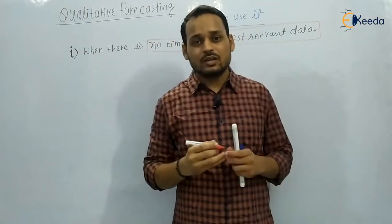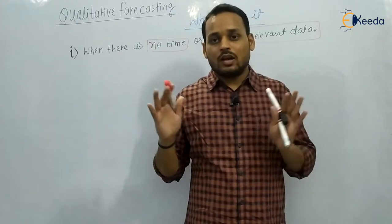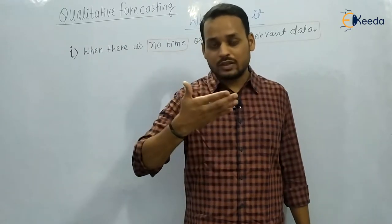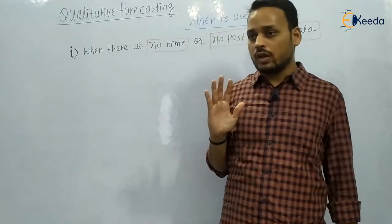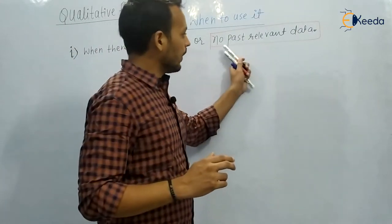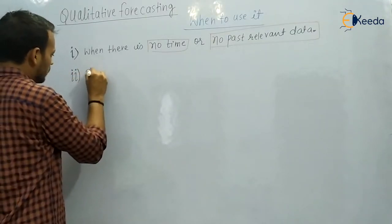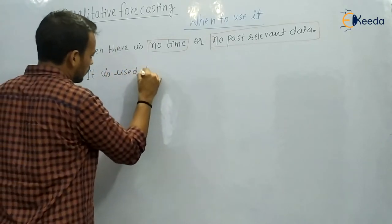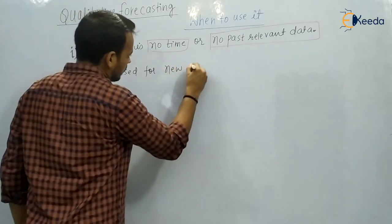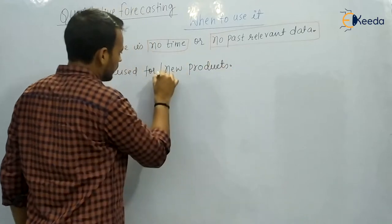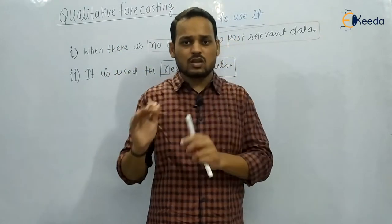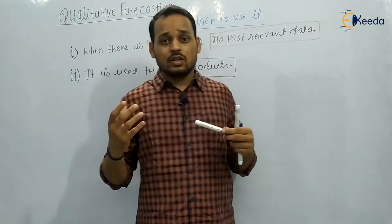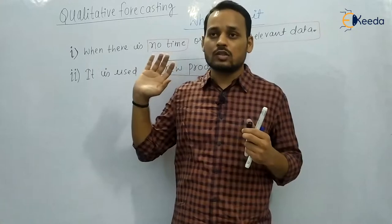Whenever we are in a hurry to launch our product and we do not have past mathematical records to analyze, we use qualitative or long range forecasting. When we do not have any past record, it is said that qualitative forecasting is used for new products, because for a new product we do not have any past relevant data. So when we are going to launch any new product, we use qualitative or subjective forecasting.